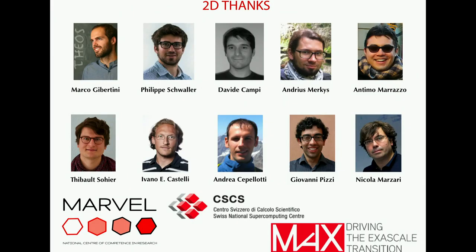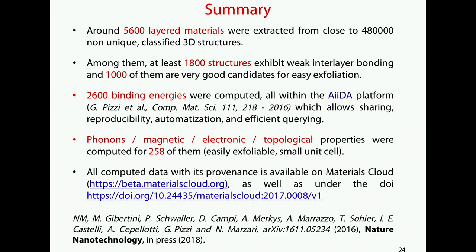Before concluding, let me show all my co-authors and thank all of them, because what they've done was really crucial. I would also like to thank the founding partners and the computing time from CSCS. In summary: we found more than 5,000 layered materials with geometric screening, then almost 2,000 exfoliable structures, among which 1,000 should be easily exfoliable. All this was done with AiiDA, which keeps the provenance of all calculations and makes them easily shareable. We are now computing phonons, magnetic, electronic, and topological properties. All this data is available in the Materials Cloud at the DOI shown here, and a Nature and Technology paper is in press, coming out next week. Thanks a lot for your attention.